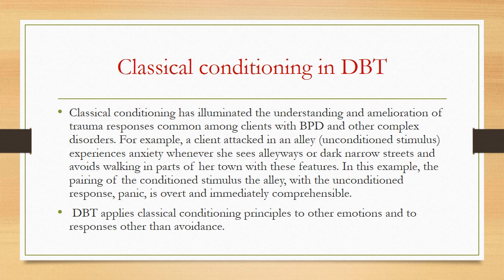DBT is based on classical conditioning — a learning process that occurs when two stimuli are repeatedly paired. For example, a client attacked in an alley (unconditioned stimulus) experiences anxiety whenever she sees alleyways or dark narrow streets, and avoids walking in parts of her town with those features. In this example, the pairing of the conditioned stimulus (the alley) with the unconditioned response (panic) is overt.